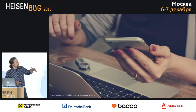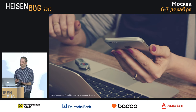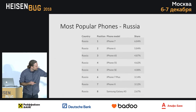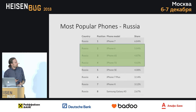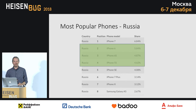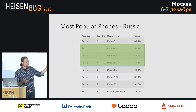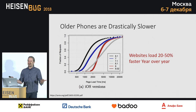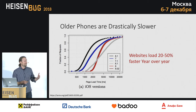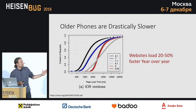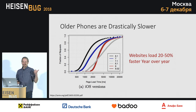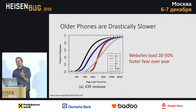The next thing is that many developers are testing on fairly new iOS devices. But if you look at the most popular phones in Russia, there are some really old iPhones on that list. Research has shown that older phones have older processors, older OS, and they're slower — websites are 20 to 50% faster on newer hardware year over year. So if you're testing on the latest device with fast Wi-Fi, you're not seeing what your customers are probably seeing.